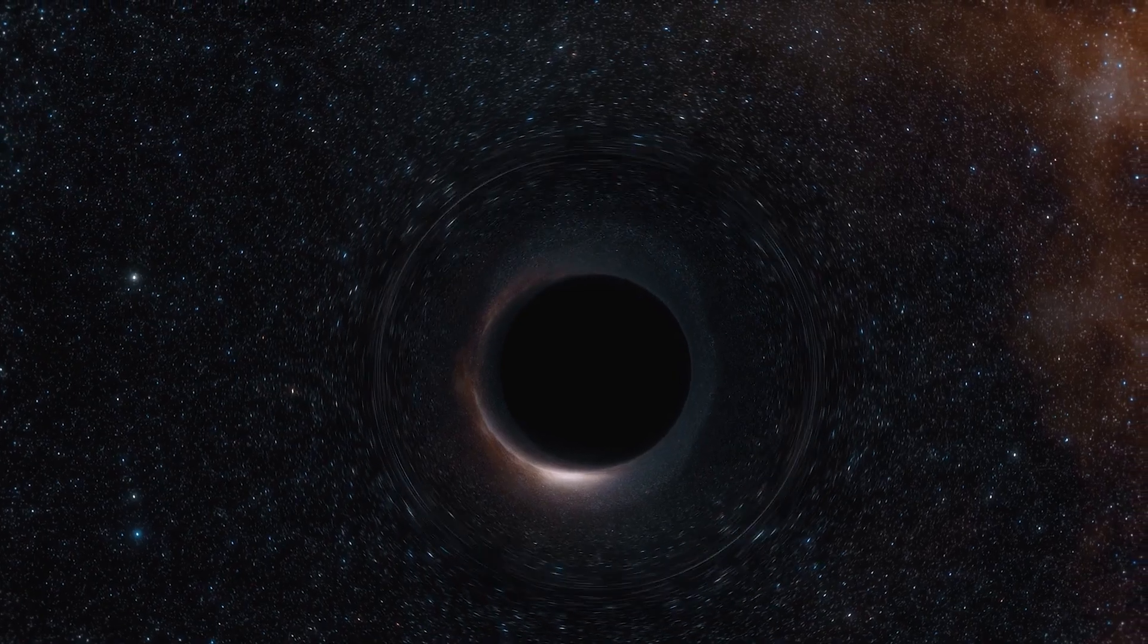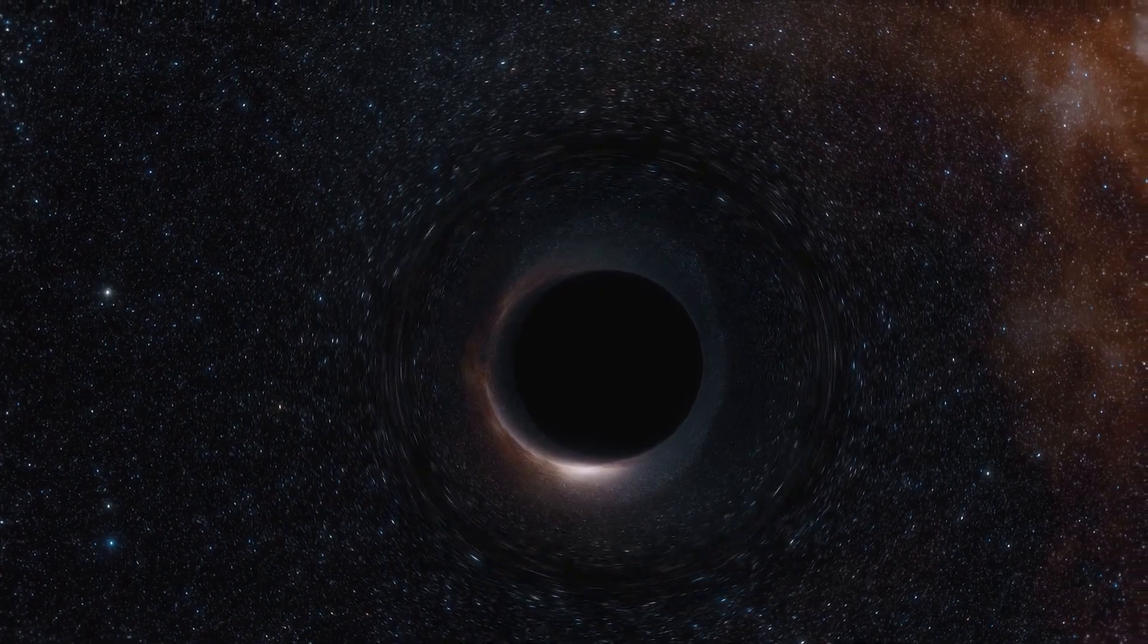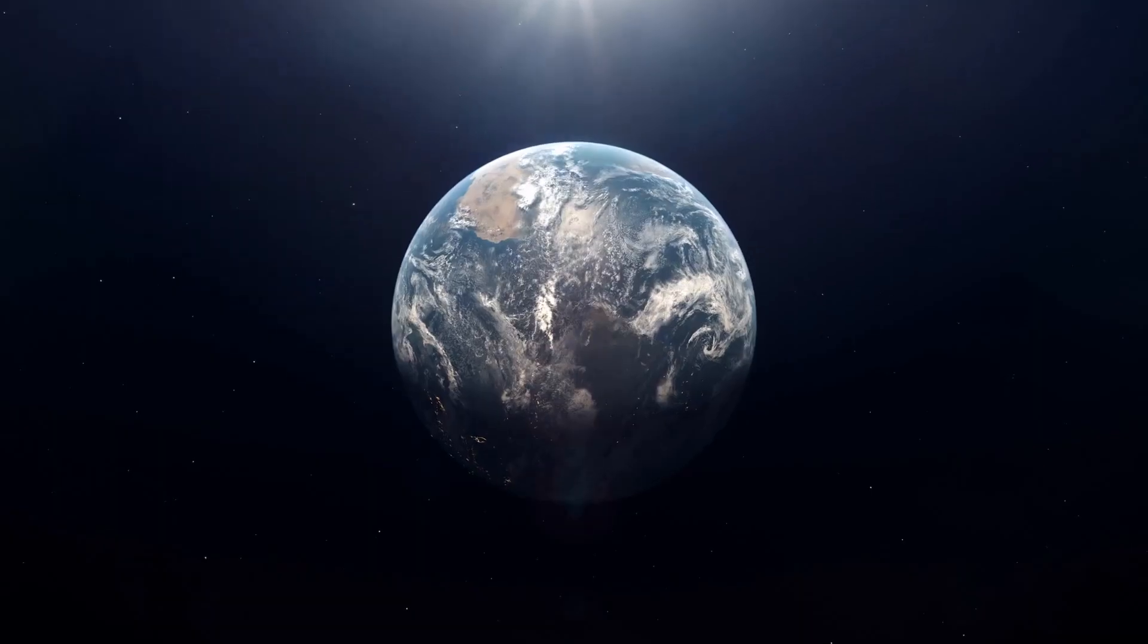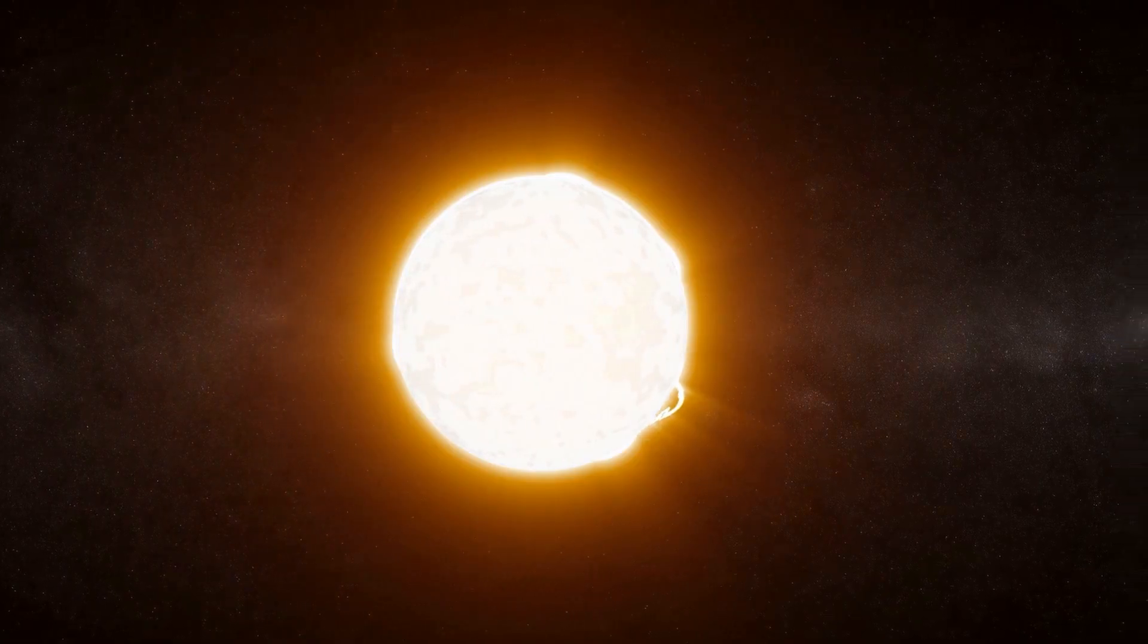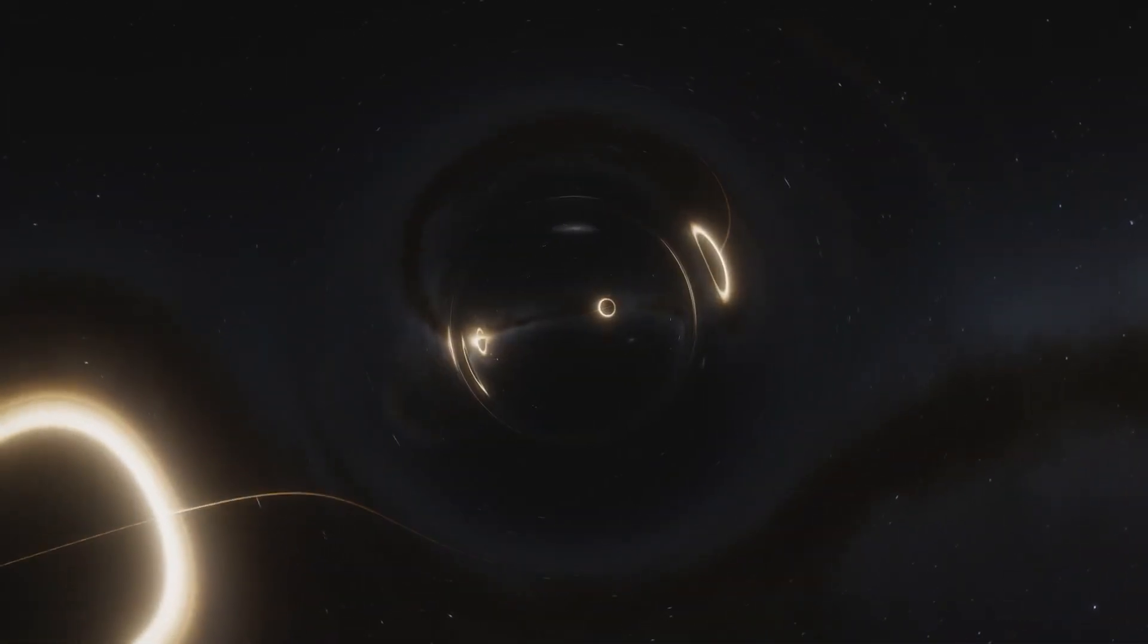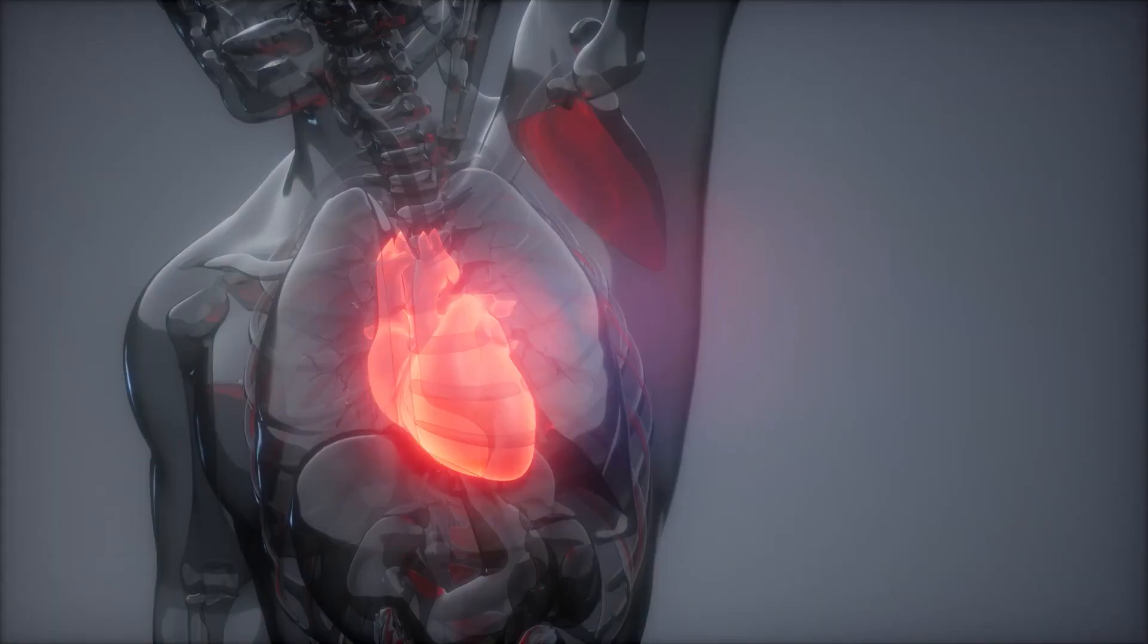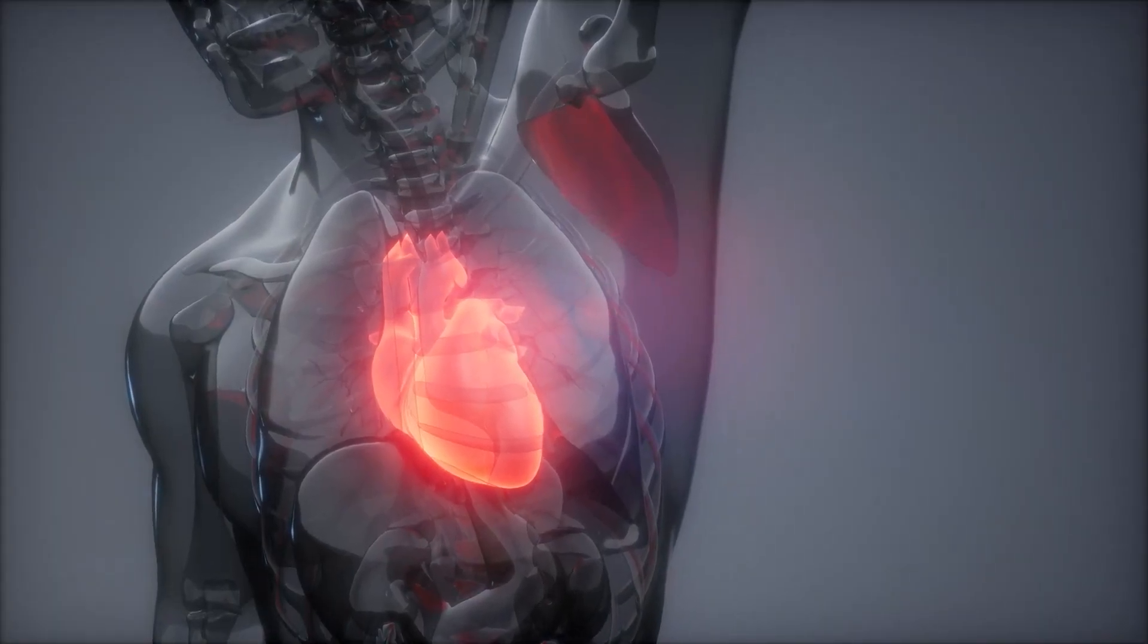But what makes black holes even more fascinating is the fact that, for example, if we were to swap the sun for a black hole of equal mass, Earth and the other planets would still orbit the sun in the same manner since there would be no noticeable difference in the gravity acting on them. The only issue would be how much colder and darker our solar system would get, like by heart.